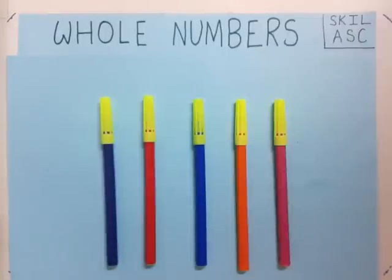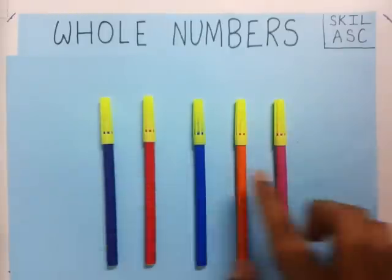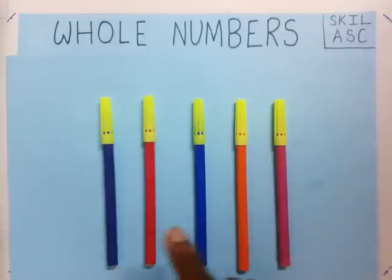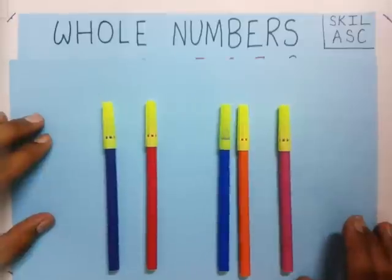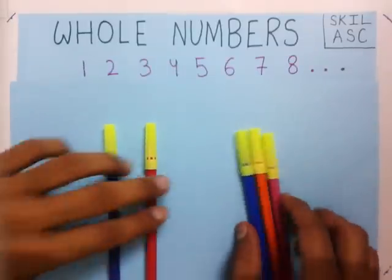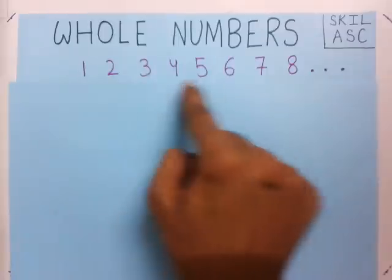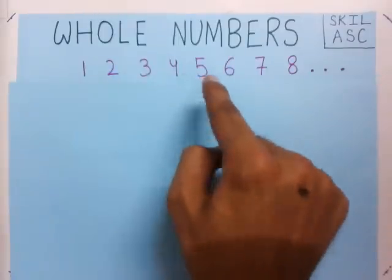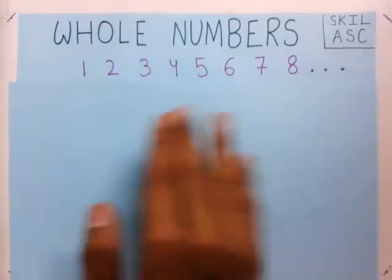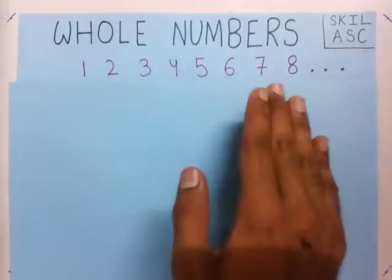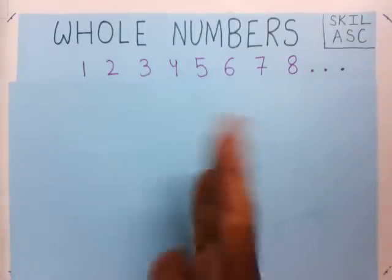Welcome everyone. What are whole numbers? We are going to learn whole numbers with the help of these colors. I ask you to count the number of colors. How do we count? 1, 2, 3, 4, 5. While counting, we have used these numbers — 1, 2, 3, 4, 5. These are the numbers which we use while counting.